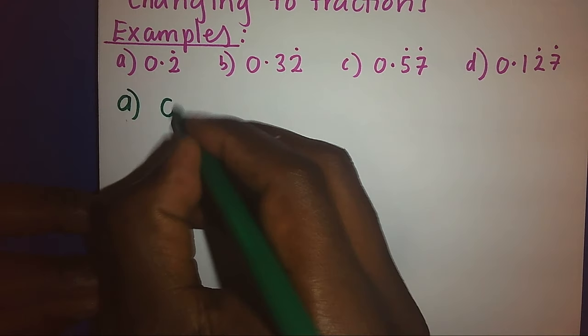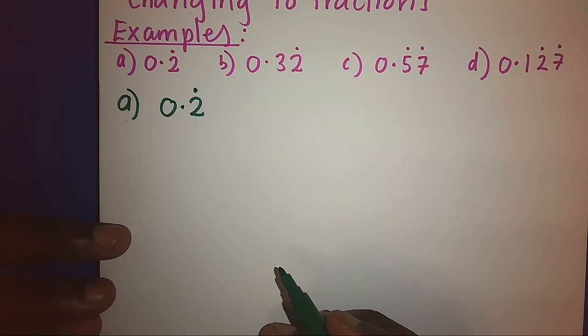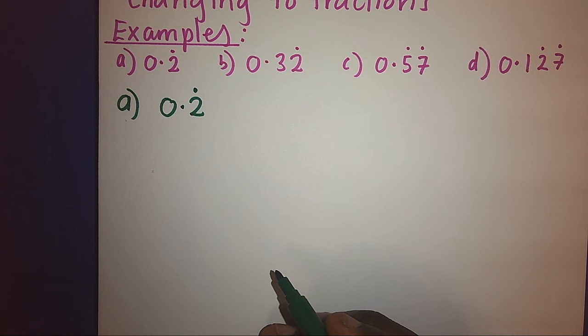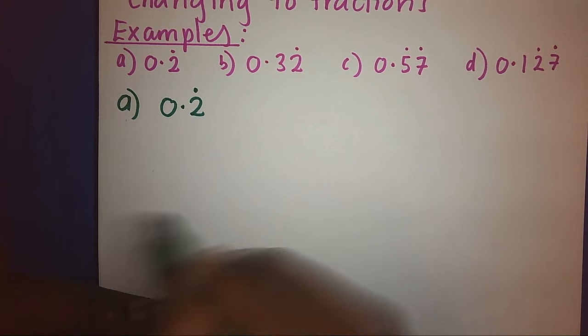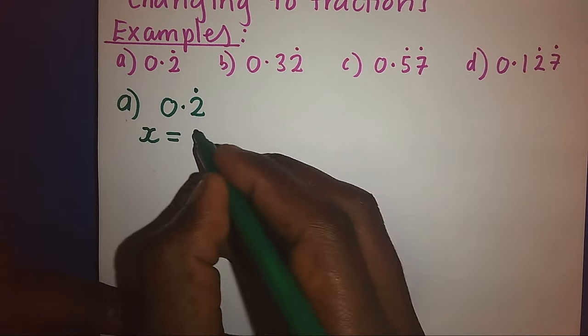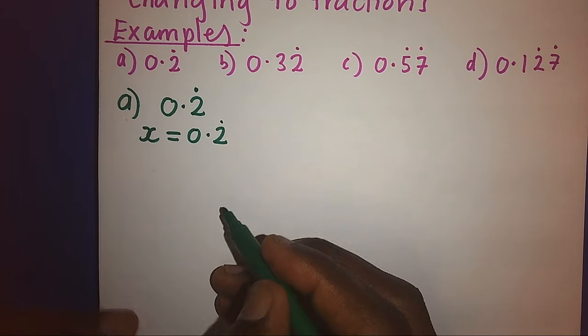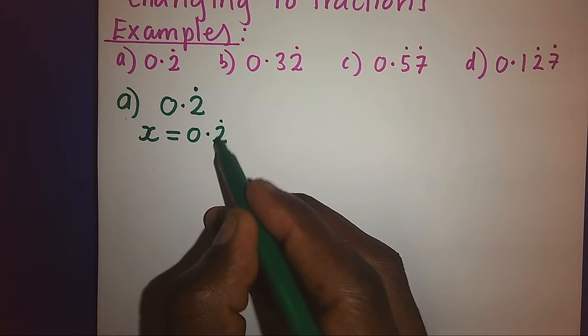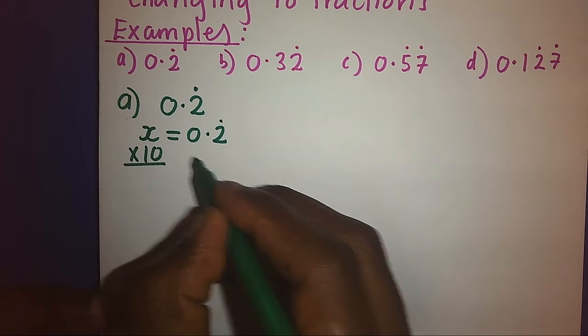0.2 recurring. When you look at 0.2 recurring, only the number 2 is recurring, meaning only one number is recurring. Therefore, first we shall let a letter to be equal to our recurring decimal, and because it is only one number which is recurring, we shall multiply by 10 on both sides.